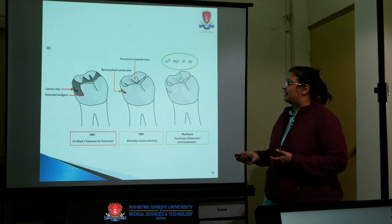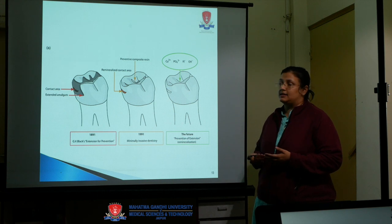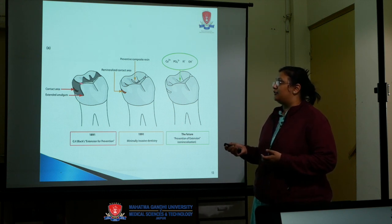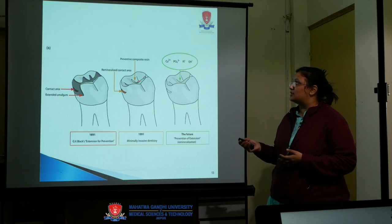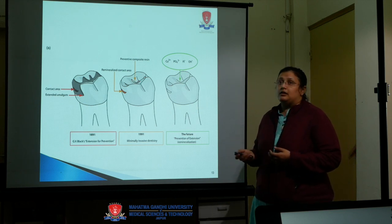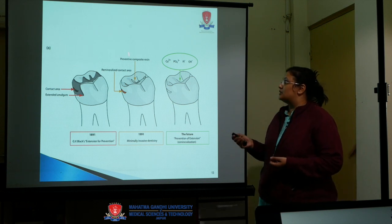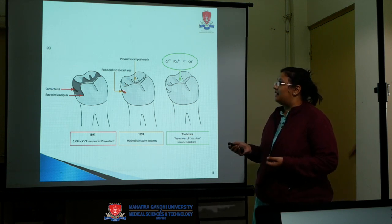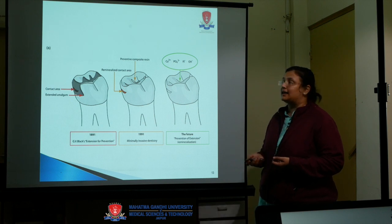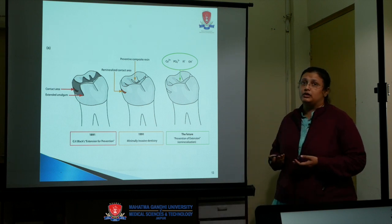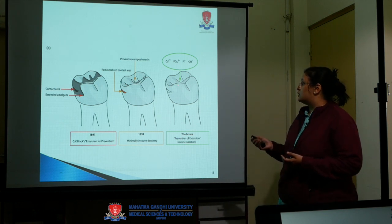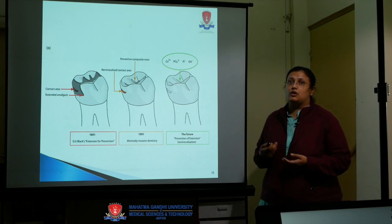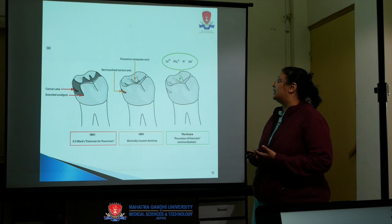First, understanding the anatomy of the teeth is important — for example, the contact area. If we are doing fillings like amalgam, we have to place it into the contact area of the tooth. For preventive composite where there are small pits or where minimal intervention is required, we use composite resins, and we can also remineralize these contact areas. By using fluoridated toothpaste or sealants, we can easily prevent caries.